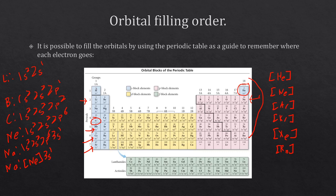That gets us through the s and p block all the way to argon. Argon had 18 total electrons: all the ones from neon, then 3s2, then all the way to 3p6 with the p block. The rule for s and p block is straightforward: each time you go one element further, you add one more electron into the block.